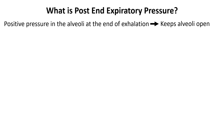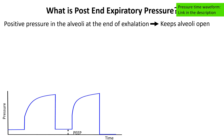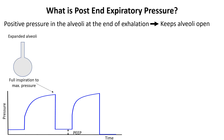The waveform given here is the pressure-time waveform. Looking at it, we can see that the pressure at the end of inspiration is maximum when the alveoli is fully inflated. At the end of expiration, the pressure does not return to zero, meaning that the alveoli is not collapsed.